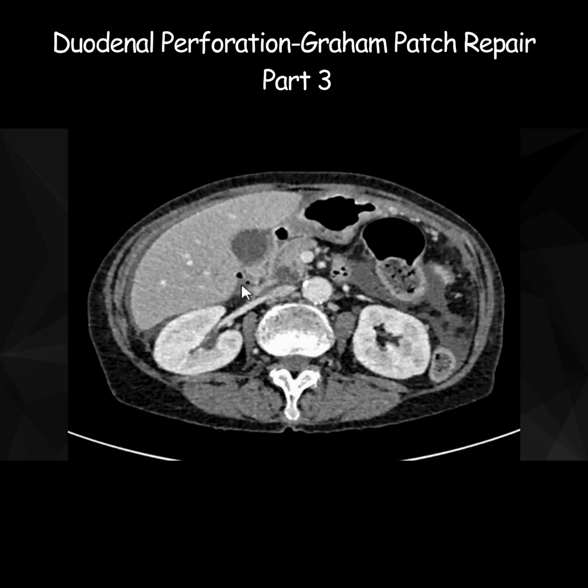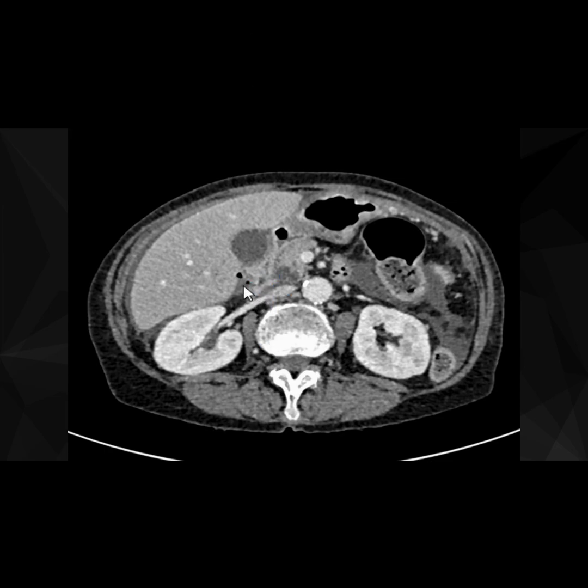So this is the perforation at D2 level, and in the majority of cases when there is anterior perforation of D2, the most common cause is a peptic ulcer.